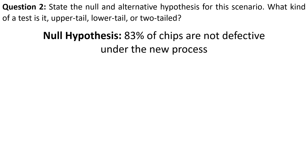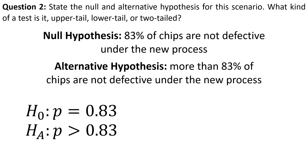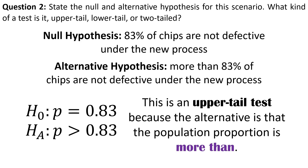Here we state the hypotheses. The null is that 83% of chips are not defective under the new process. The alternative is that more than 83% of chips are not defective — in other words, that changing the manufacturing process improved the quality. This would be an upper-tail test because the alternative is that the population proportion is more than 0.83, so we're working in the upper tail of the normal distribution.